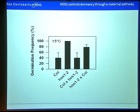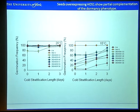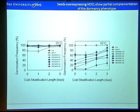We wanted to understand whether HOS1 has this effect through a maternal pathway. To do this, we made crosses between Columbia and HOS1. When you cross Columbia to HOS1, germination is higher than when you cross HOS1 to Columbia, suggesting that HOS1 acts through a maternal pathway. When we looked at dormancy levels in HOS1-overexpressing seeds in the HOS1 mutant background, the dormancy levels are very low at 20 degrees and at 15 degrees HOS1 mutants show no dormancy, while Columbia shows higher dormancy. The overexpressing lines appear to have an intermediate phenotype, so overexpressing HOS1 in the mutant background does not give full complementation of the dormancy phenotype.